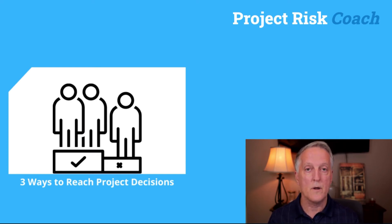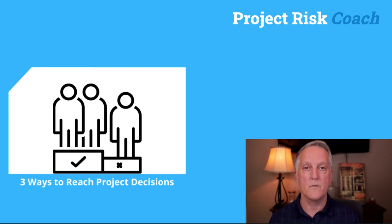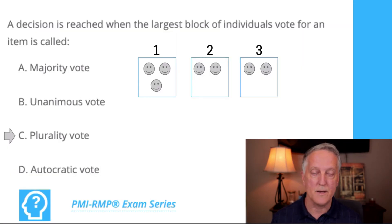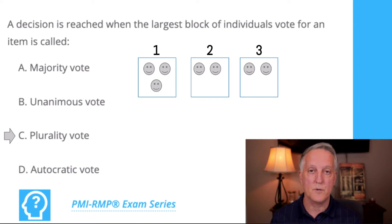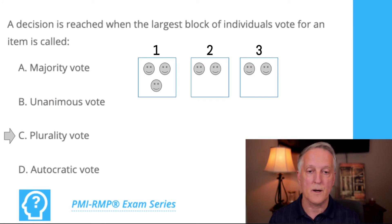Or we may have a plurality vote. Let's dive a little deeper into the plurality vote. Here's an example: we have seven people on our project team. Three of those people vote for option number one, two vote for option number two, and two vote for option number three.